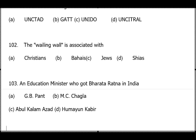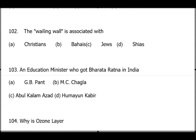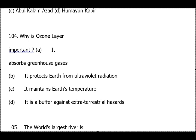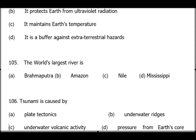Question 102: The Wailing Wall is associated with Jews. Question 103: Education minister who got Bharat Ratna — Abul Kalam Azad, also the first Education Minister of India. Bharat Ratna was first awarded in 1954 to three persons: Sarvepalli Radhakrishnan, C.V. Raman, and a third. Question 104: Why is the ozone layer important? It protects the Earth from ultraviolet radiation — option A.